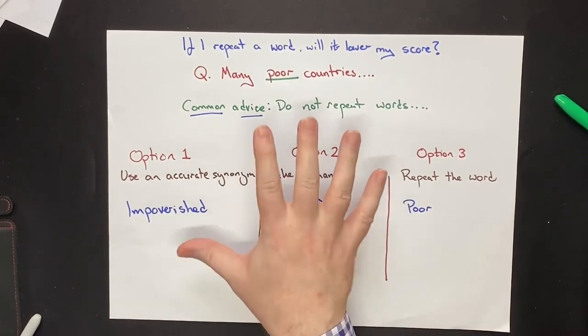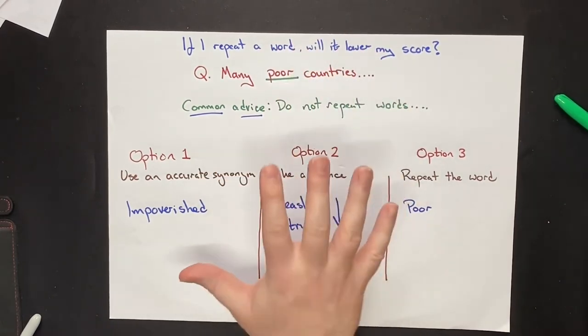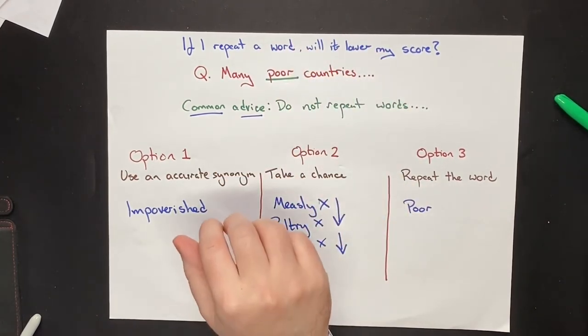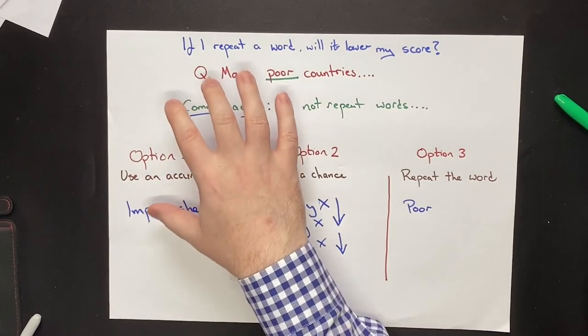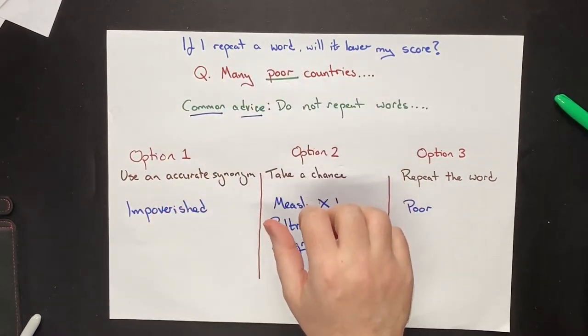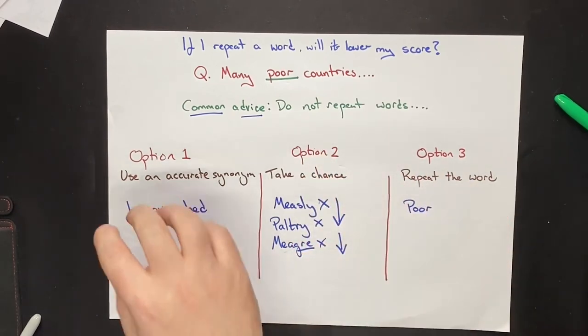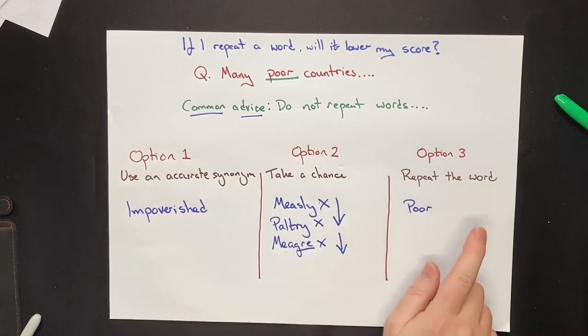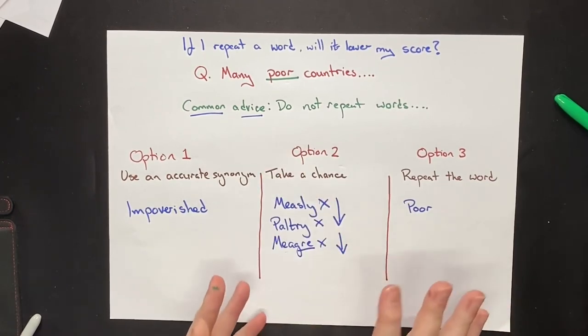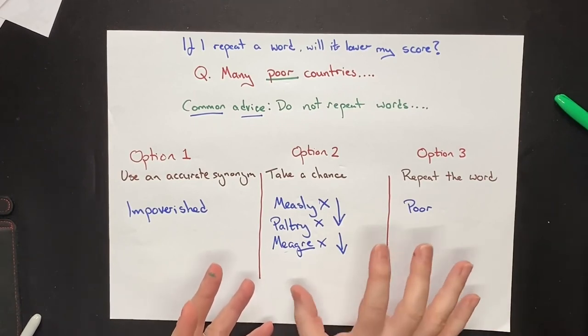Imagine you write a great essay, like a band eight essay, and you have clearly understood the question, clearly answered the question, everything is clear, well-structured, well-organized, logical, easy to understand, great grammar, lots of option ones, and you repeat the word. Would an examiner ever look at that essay and go, oh, they repeated one word, let's give them a band five. That is not how an examiner thinks about your essay.